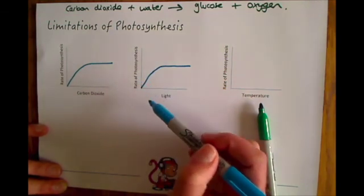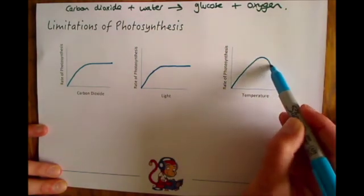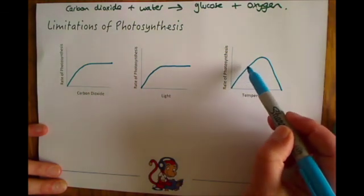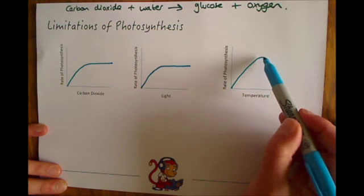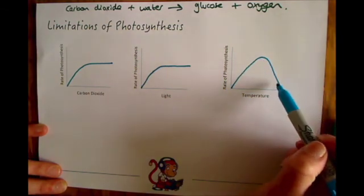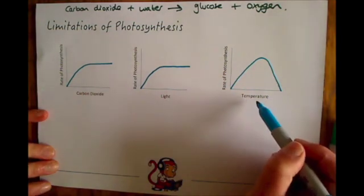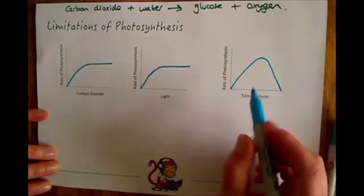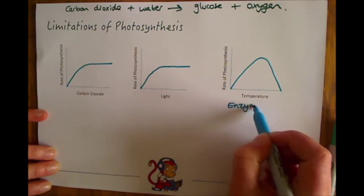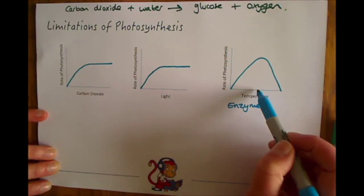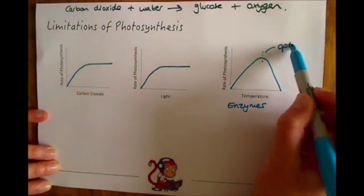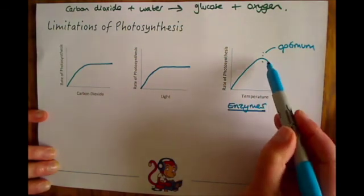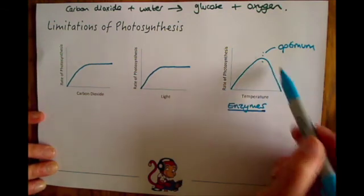With temperature you have a slightly different pattern which looks a little bit like this, whereby there is an optimum temperature for photosynthesis. Increasing temperature will increase the rate of photosynthesis up until a certain point and then it will start to decrease the rate of photosynthesis. This shape curve is slightly different because with temperature you're talking about the enzymes involved in the photosynthesis process. Because enzymes work at an optimum temperature, if you increase the temperature there will be an optimum temperature for photosynthesis to happen. If you increase the temperature too much those enzymes will then become denatured and it will reduce the rate of photosynthesis.